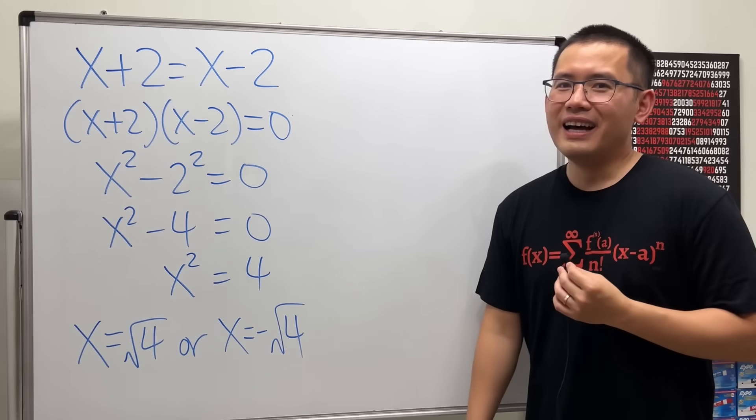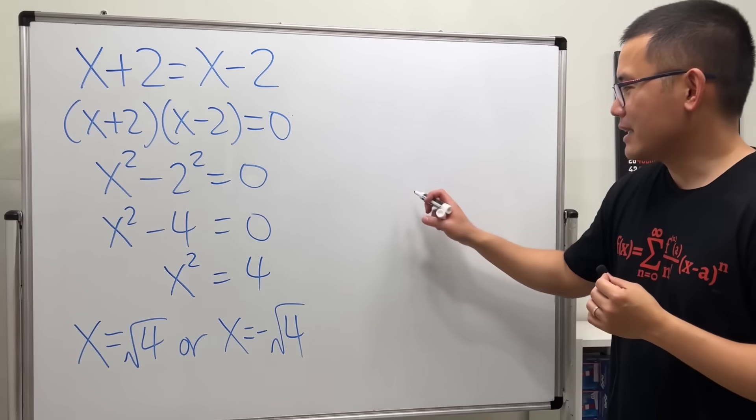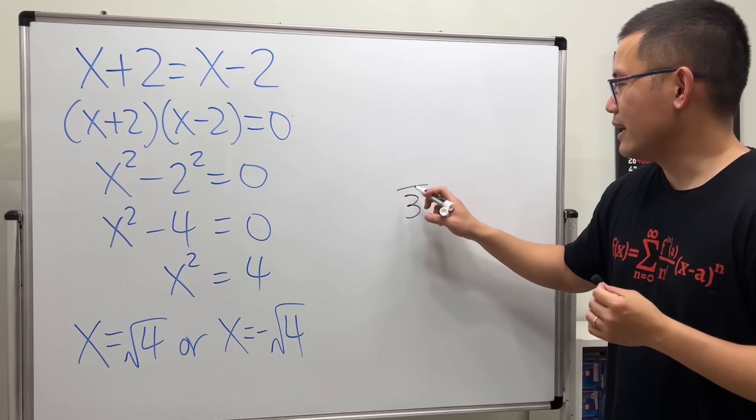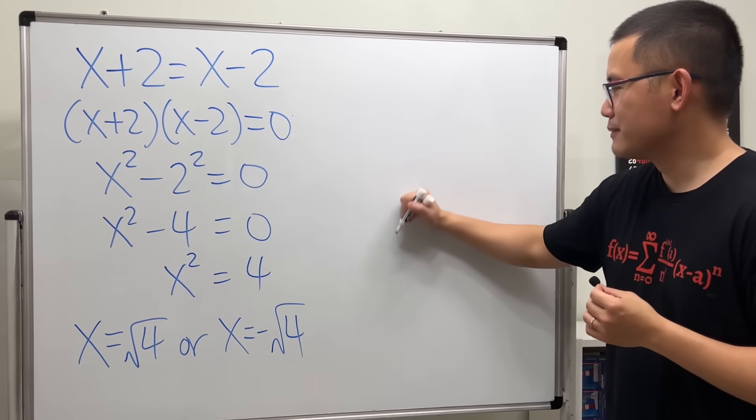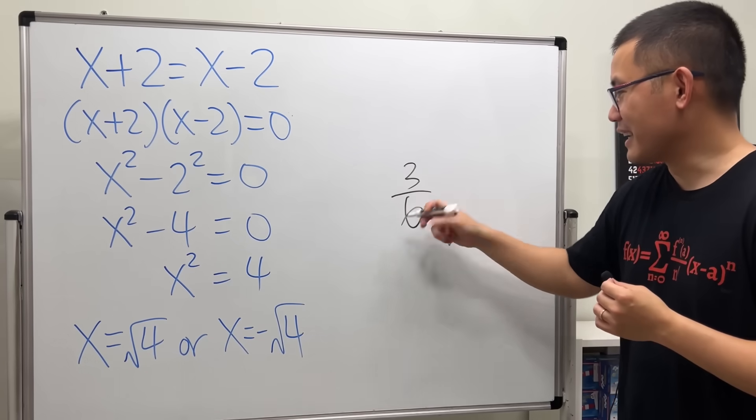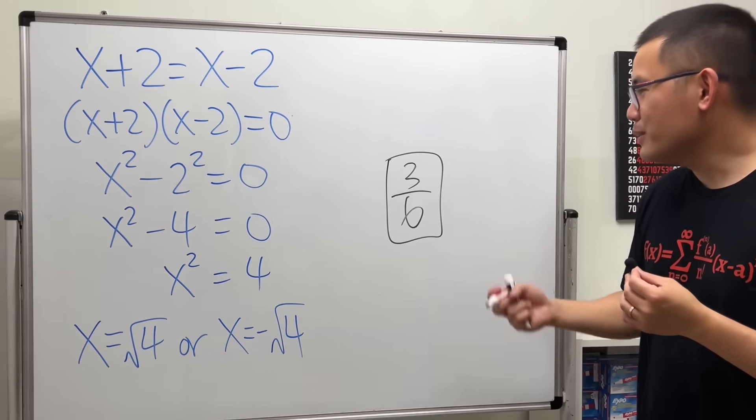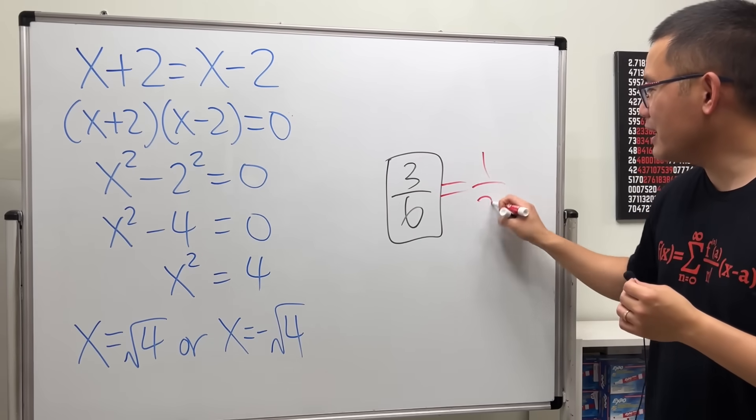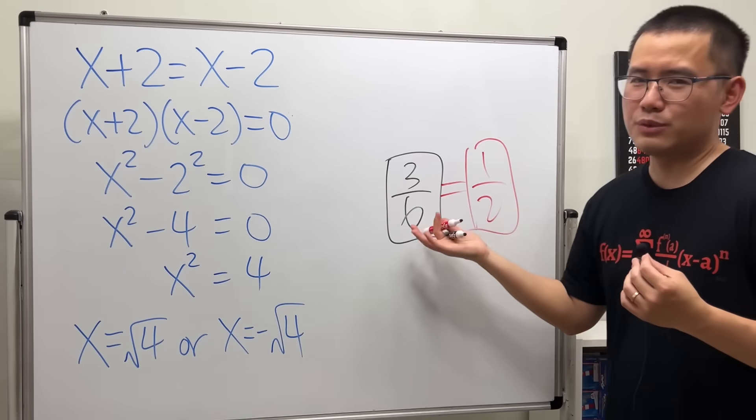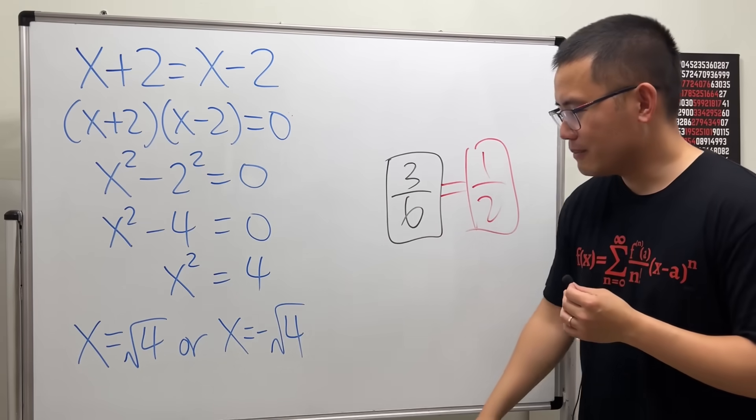And as a calculus teacher, I think this all the time. My calculus students, they just write, let's say, 3 over 6, like this, for the final answer. It's like, no, don't do this. Write it as one half. I know there's nothing wrong with it, but reduce the fraction. But anyway.